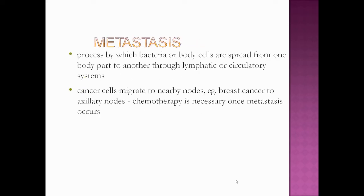We have discussed all the major lymph nodes briefly. Now we will discuss metastasis. Metastasis is the process by which bacteria or body cells spread from one body part to another through the lymphatic or circulatory system. Cancer cells migrate to nearby nodes — for example, breast cancer spreads to the axillary nodes — so chemotherapy is necessary once metastasis occurs.